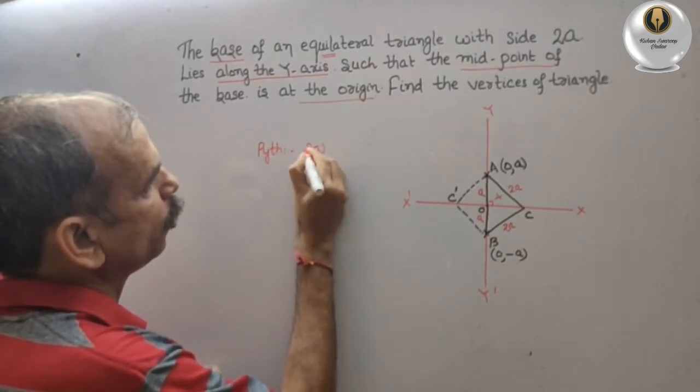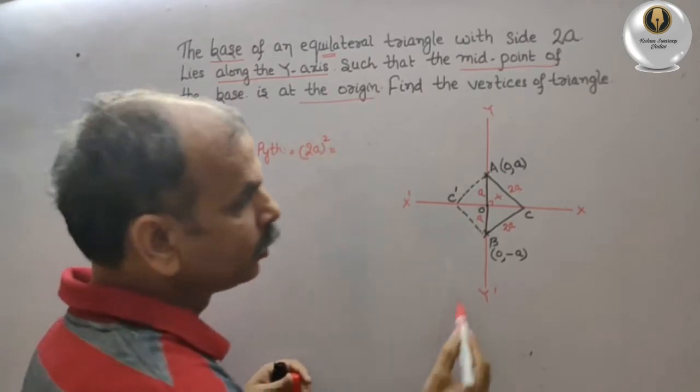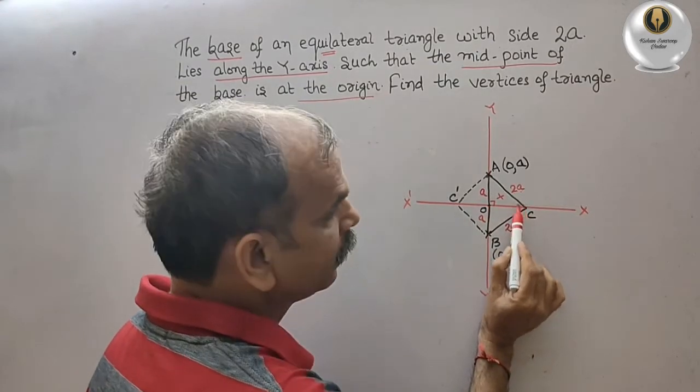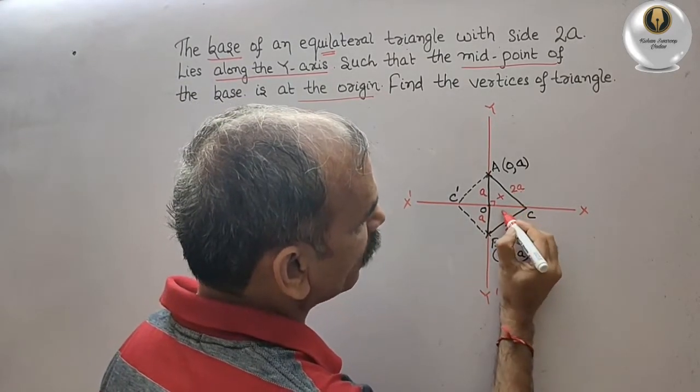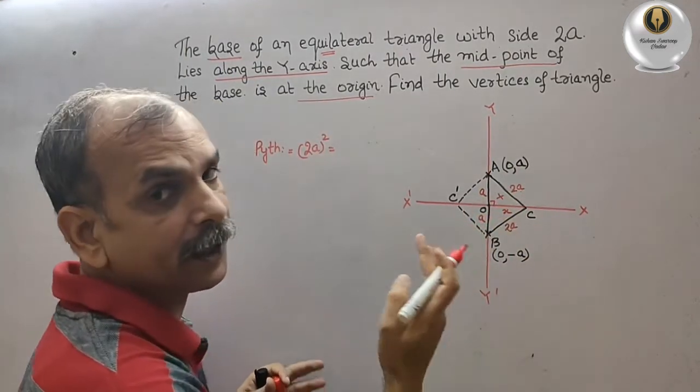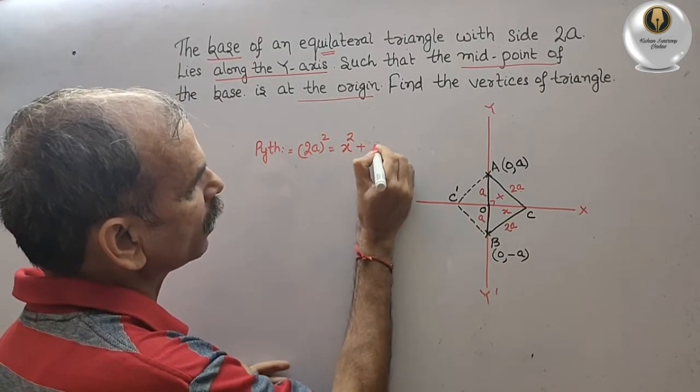2a whole square is equal to, we are not knowing this, so we can take it as X at present, and this is your A. So we can say X square plus A square.